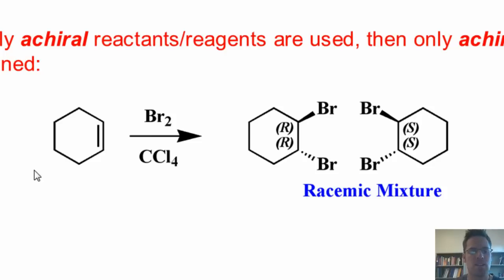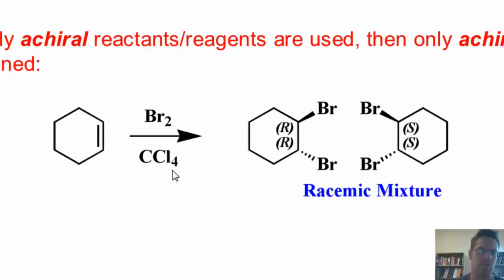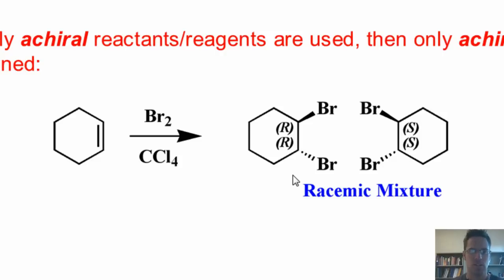Are my reactants and reagents achiral? Of course they are. Cyclohexene does not have any stereochemistry in it. Bromine doesn't have any stereochemistry in it. And this solvent, carbon tetrachloride, doesn't have any stereochemistry in it. Thus, if I ran this reaction, I would get a completely 50-50 mixture of both enantiomers in solution — a racemic mixture, which is achiral.